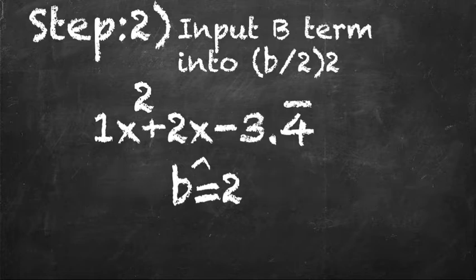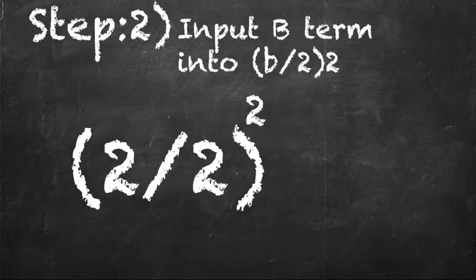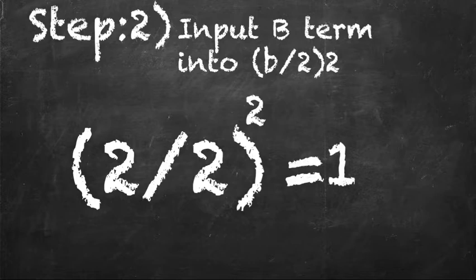We're going to be using the b term. That equals 2, so we're going to put 2 over 2 and square it. As you know, 2 over 2 equals 1, and that squared equals 1 still.